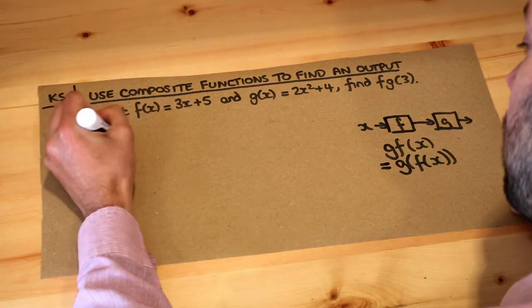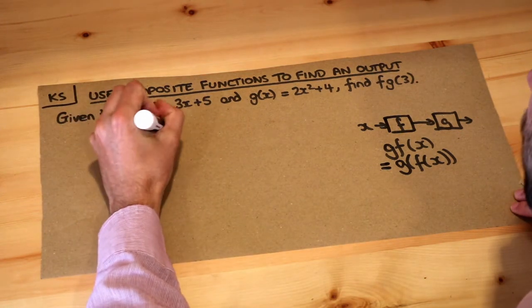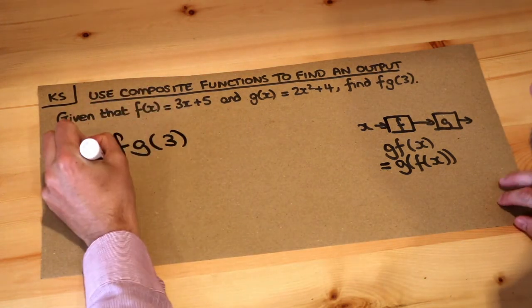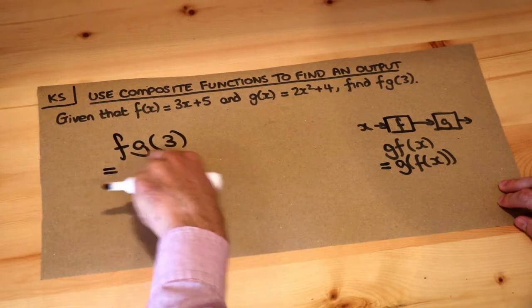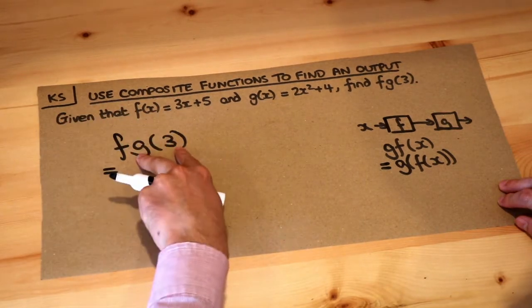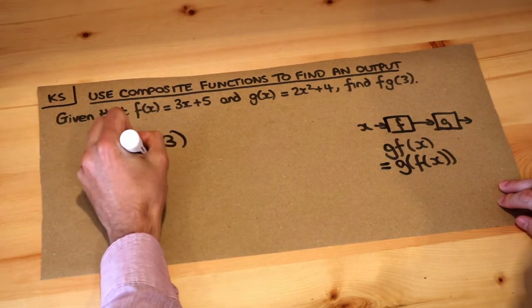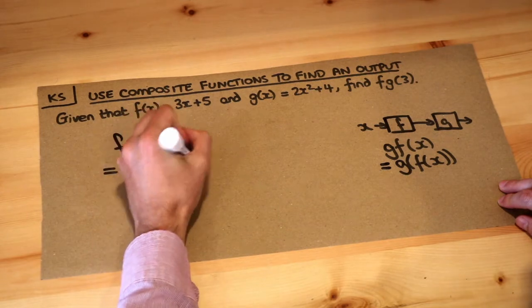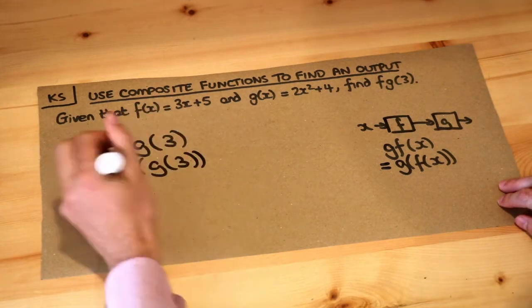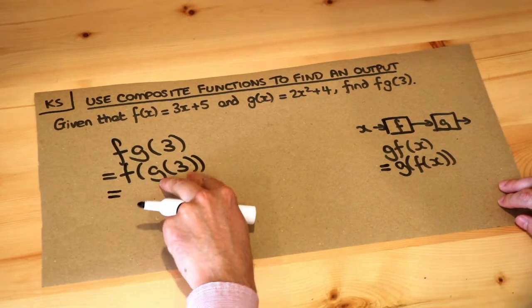So let's think about that. We've got fg(3), and as I said we can put brackets around this thing at the end. So it means f of g of 3. So let's work out what g(3) is first.